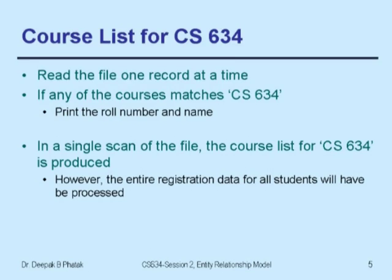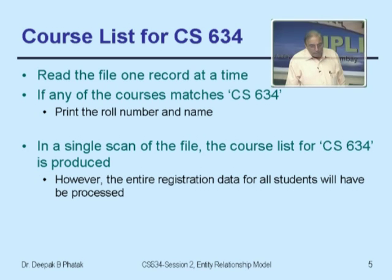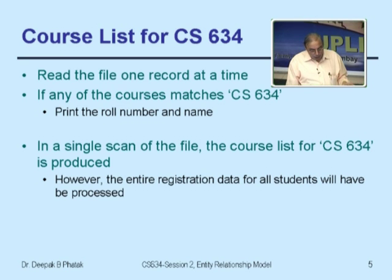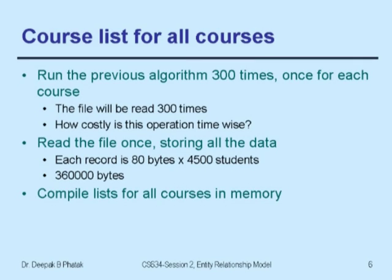Suppose you had a physical file of 4,500 forms and were told to prepare a course list for all courses. IIT Bombay produced course lists manually until about 20 years ago, and many institutions still do so today. The agreed algorithm: read the file one record at a time; if any course matches CS634, print the roll number and name. In a single scan you produce the list for CS634. To do all 300 courses, run this algorithm 300 times — the file is read 300 times.